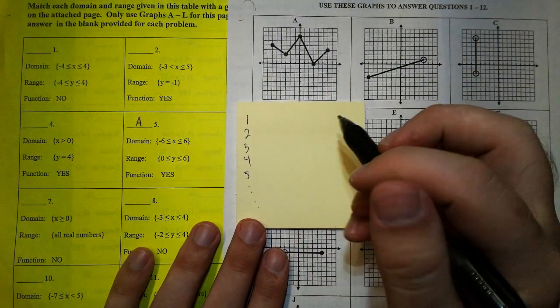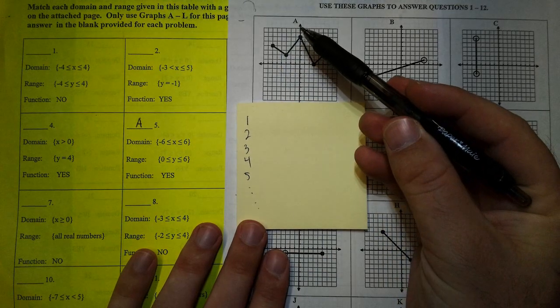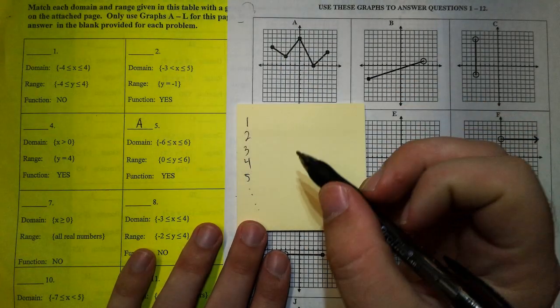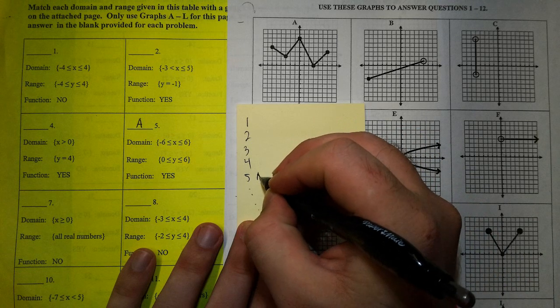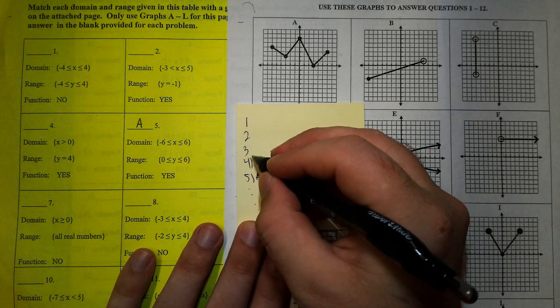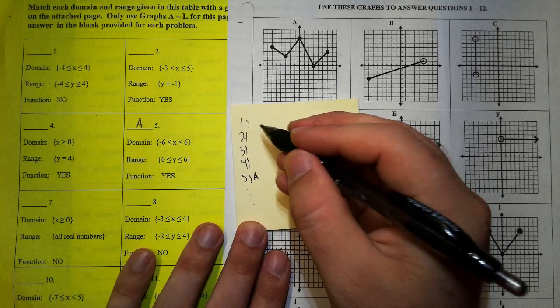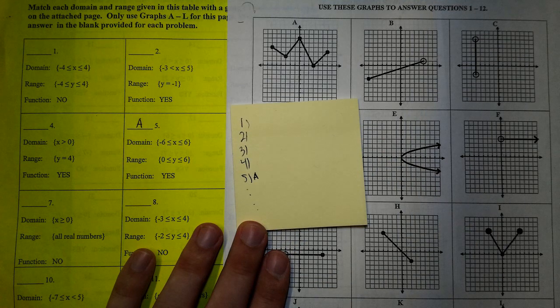And then every time you get a letter matching up with a number, you're going to write it. Letter A matches up with 5, so next to 5 you're just going to put A. If you can do that on your notebook paper, then I can grade you on the activity.